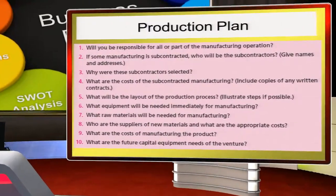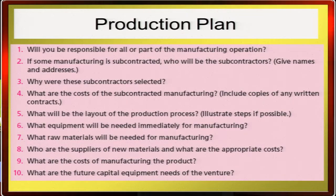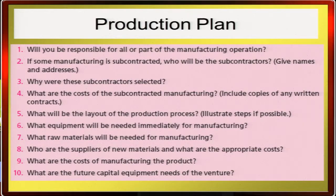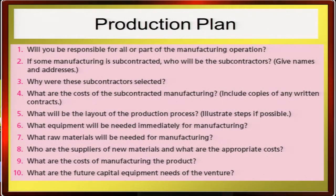Now let's look at the production plan. By answering about ten questions, you can come up with your production plan. Will you be responsible for all or part of the manufacturing operation? If some manufacturing is subcontracted, who will the subcontractors be — give names and addresses. Why were these subcontractors selected? What are the costs of subcontracted manufacturing? What will be the layout of your production process? What equipment will be needed immediately? What raw materials will be needed? Who are the suppliers and what are the costs? What are the manufacturing costs? What are the future capital requirements of the venture?